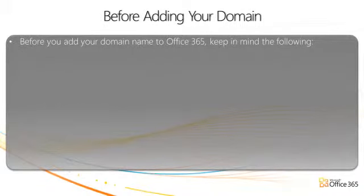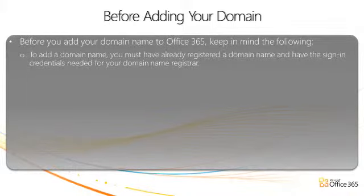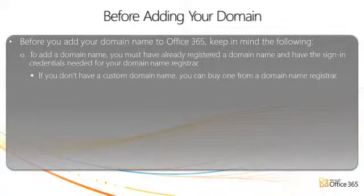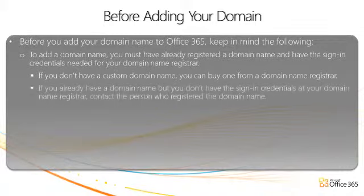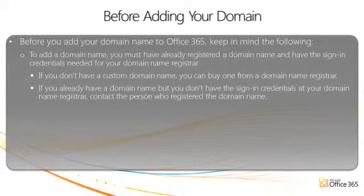Before you add your domain name to Office 365, keep in mind the following. To add a domain name, you must have already registered a domain name and have the sign-in credentials needed for your domain name registrar. If you don't have a custom domain name, you can buy one from a domain name registrar. If you already have a domain name but you don't have the sign-in credentials at your domain name registrar, contact the person who registered the domain name.